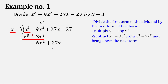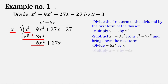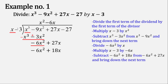Now let's repeat step 2. Negative 6x squared divided by x gives negative 6x. Negative 6x multiplied by the divisor x minus 3 gives negative 6x squared, and negative 6x times negative 3 is positive 18x. Now let's change the sign and add. This cancels out. Then 27 minus 18x gives 9x. Bring down negative 27.